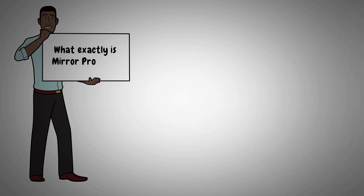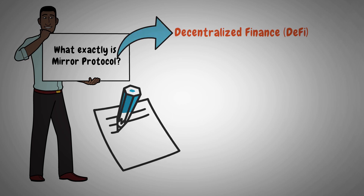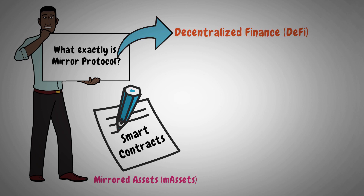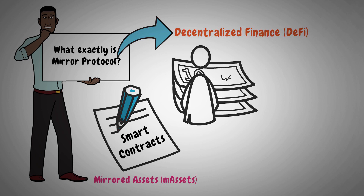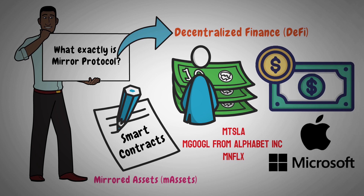So, what exactly is Mirror Protocol? Mirror Protocol is a decentralized finance system that allows Terra Network smart contracts to create synthetic assets, known as mirrored assets. The M-assets track the price behavior of fiat assets and provide traders with open access to price exposures without the hassles associated with holding or trading fiat assets. Some of the most popular trading assets on Mirror are MTSLA, M-Google from Alphabet Inc., and MNFLX, as well as assets from Apple, Microsoft, and Alibaba.